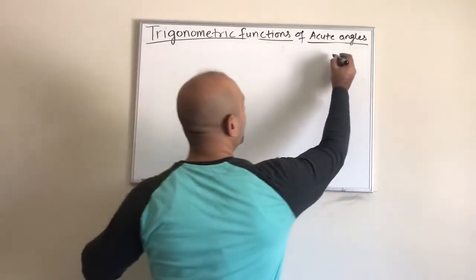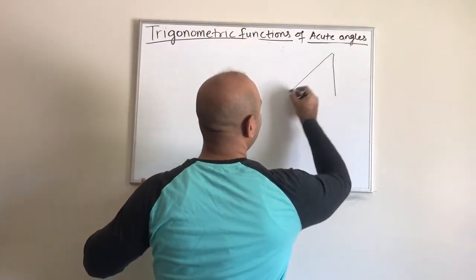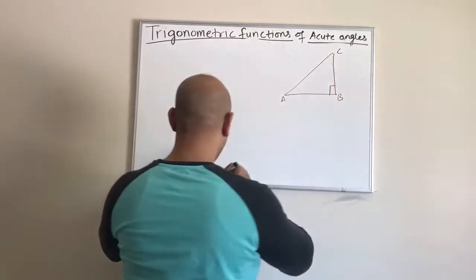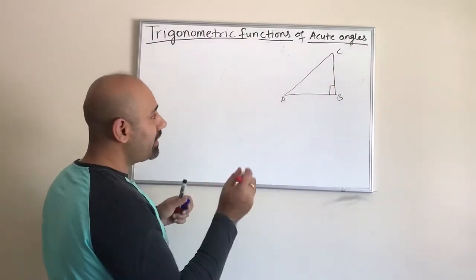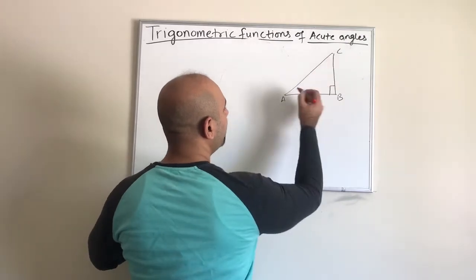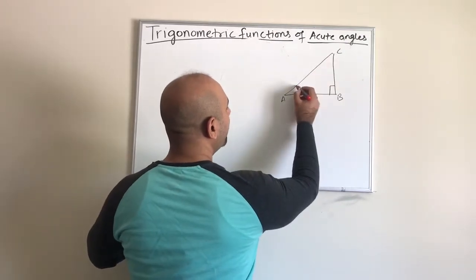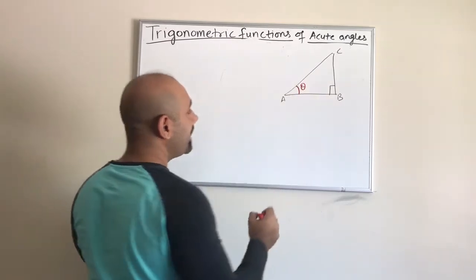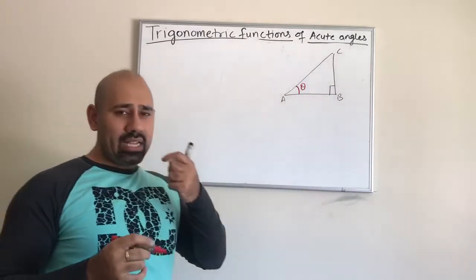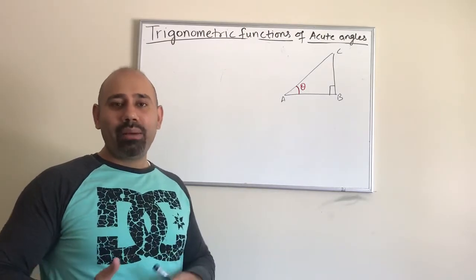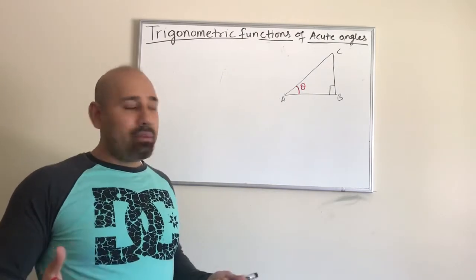First of all, we have a right triangle — let's call it triangle ABC. We have to start by identifying our reference angle. You are free to use either angle as a reference angle; for convenience I'm using this one and calling it theta. Theta is the most popular, but there are other Greek letters used to denote angles, like alpha, beta, gamma, phi, and many more.